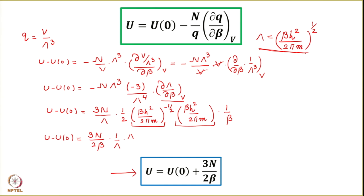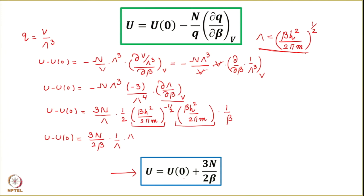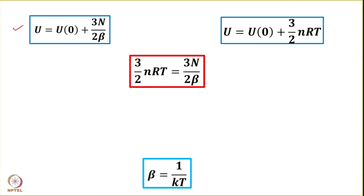We used the equipartition theorem result that internal energy is 3/2 nRT, and exclusively using the translational contribution we arrived at u equals u₀ plus 3n over 2β. Comparing these two expressions: 3/2 nRT equals 3n over 2β. Let us further work on this.